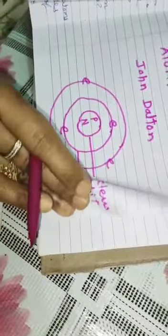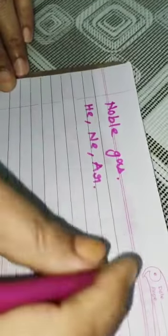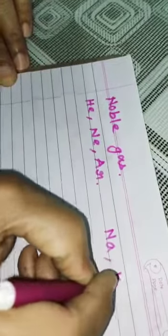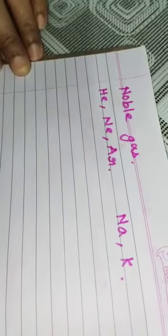Now let us see that few atoms can exist alone. They are the noble gases like helium, neon, argon. They can exist in their atomic state. Even metals also like sodium, potassium can also exist in single atomic form.